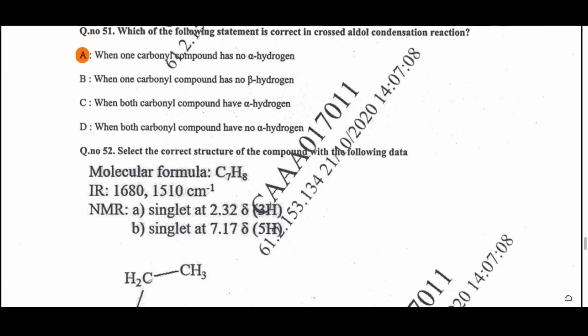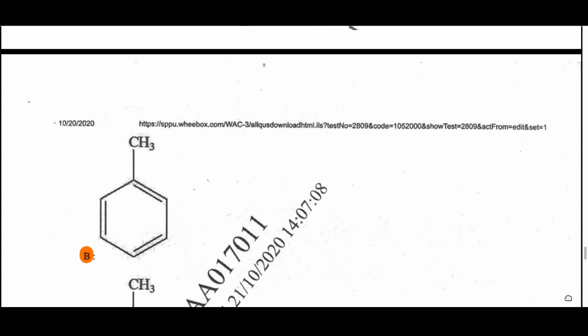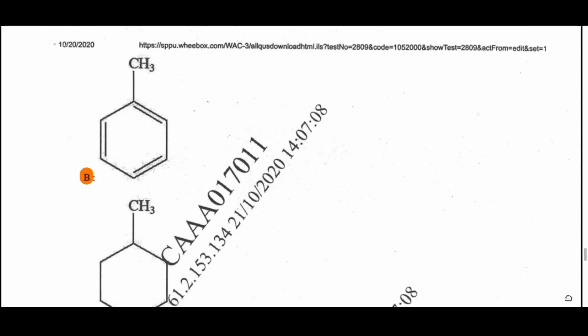Question 51: Which statement is correct about crossed aldol condensation? Option A — when one carbonyl compound has no alpha hydrogen, we get only one major product in the crossed aldol condensation. Question 52: Select the correct structure for the compound with molecular formula C₇H₈, IR bands at 1680 and 1510 cm⁻¹, NMR signal A at 2.32 delta for 3 protons, and signal B singlet at 7.17 delta for 5 protons. It is a monosubstituted aromatic compound — answer is B, toluene (methyl group attached to benzene ring).